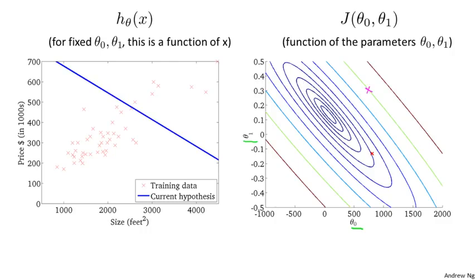For example, these three points drawn in magenta all have the same value for j of theta 0, theta 1, on the theta 0, theta 1 axis. If you haven't seen contour plots before, imagine a bow-shaped function coming out of your screen, where the minimum — the bottom of the bowl — is at this center point, the middle of these concentric ellipses. Each ellipse has the same height above the screen, and the minimum of the bowl is right at the center. The contour figure is a convenient way to visualize the function j.